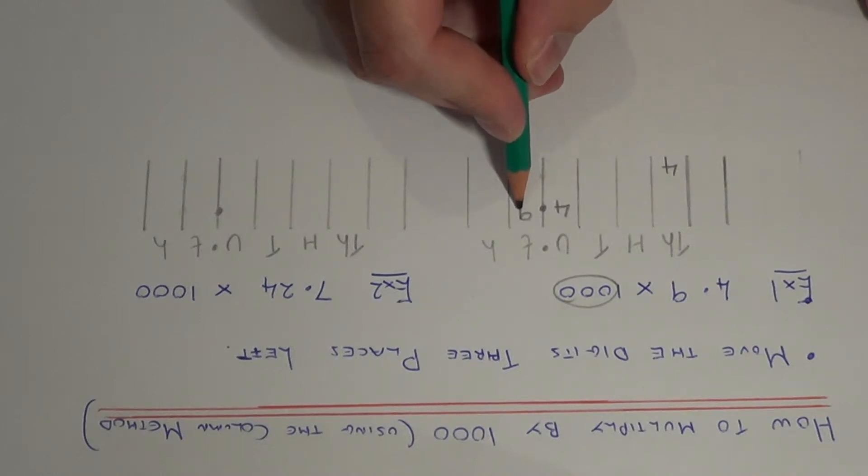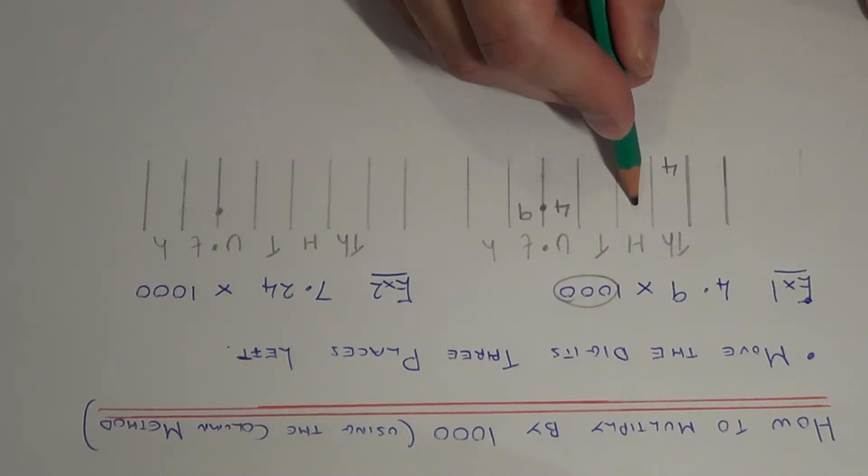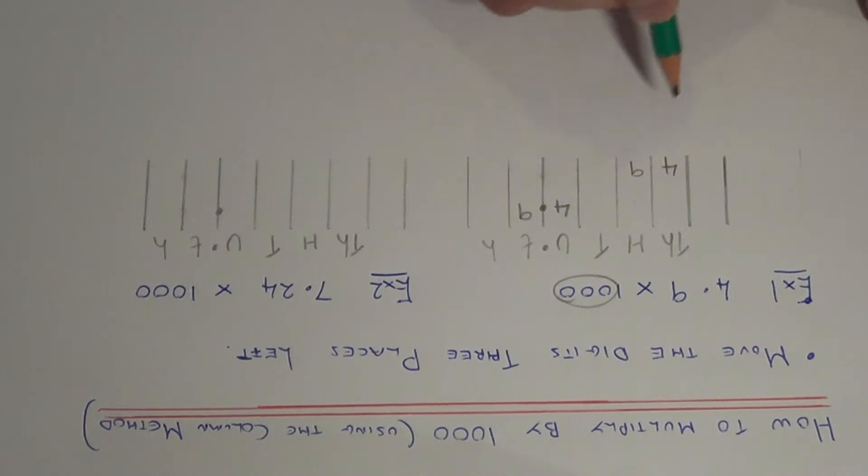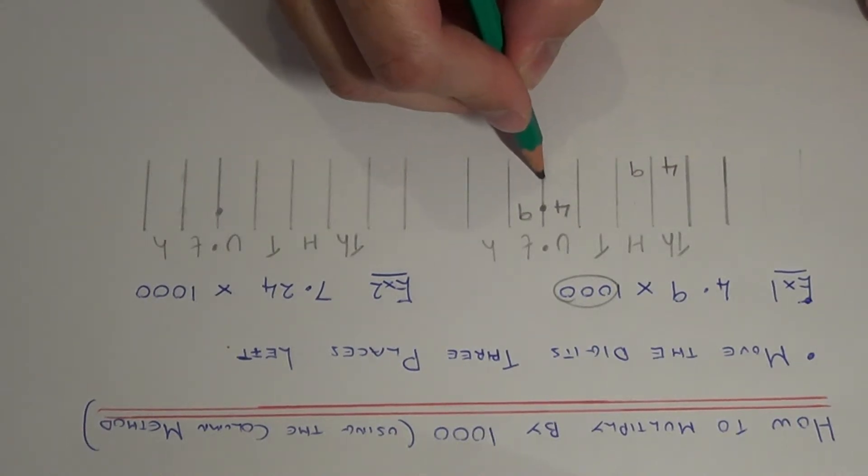Let's move the nine three places left. One, two, three. So the nine goes in the hundreds column. The decimal point doesn't move.